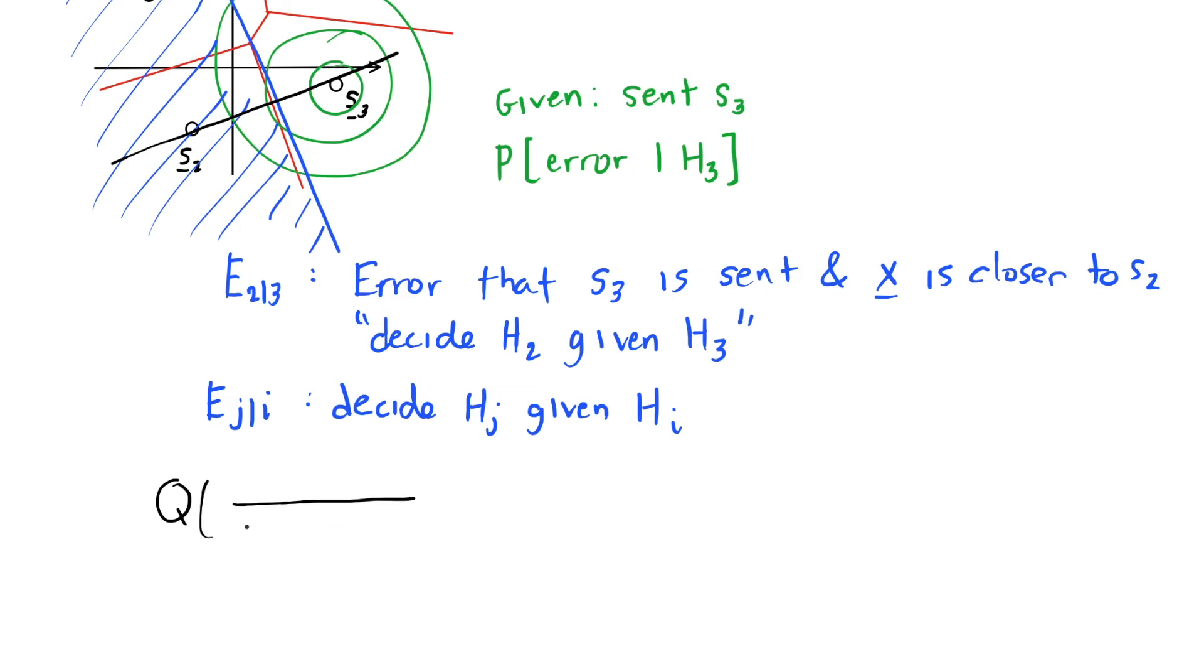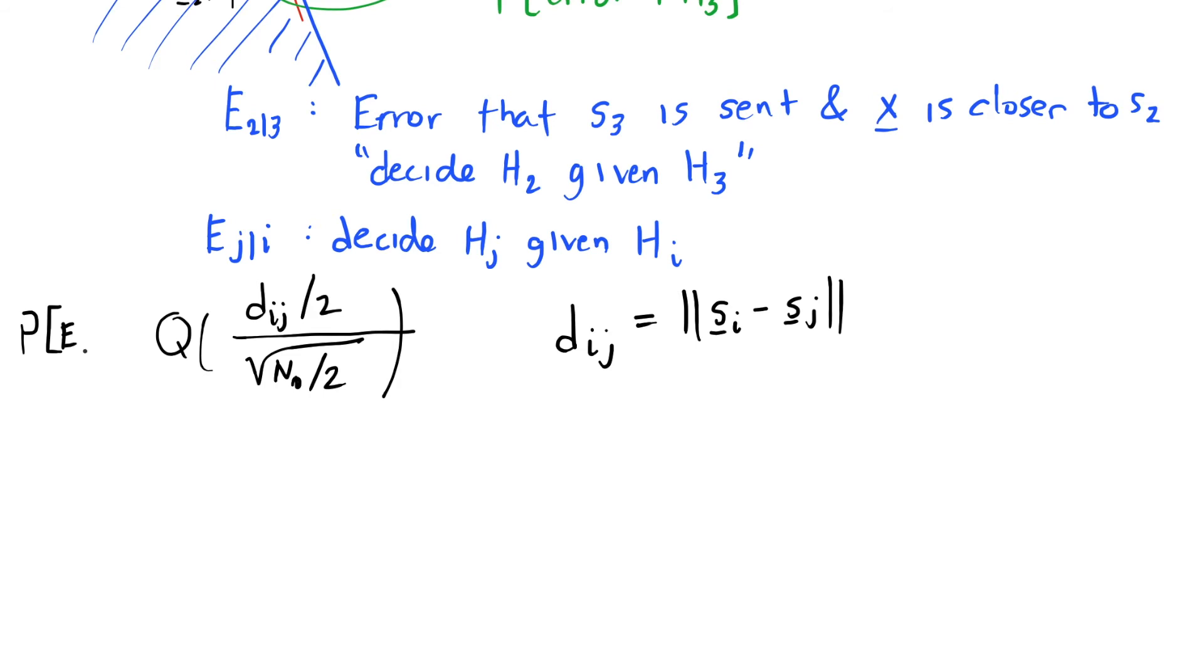That is something we've written as a Q function with the distance between the mean and the threshold on top and the standard deviation of the Gaussian on the bottom. The standard deviation is the same because it had independent components. It doesn't matter what angle I take this axis, I'm going to have the same standard deviation of the square root of n0 over 2. On top, we're talking about the distance between here and here, which is half of the distance between symbol 2 and symbol 3. Here I'm going to denote dij as the Euclidean distance between vector i and vector j. This distance is d23. So the probability of ej given i equals this Q function. Let me put everything inside the square root, so it'll simplify to dij squared.